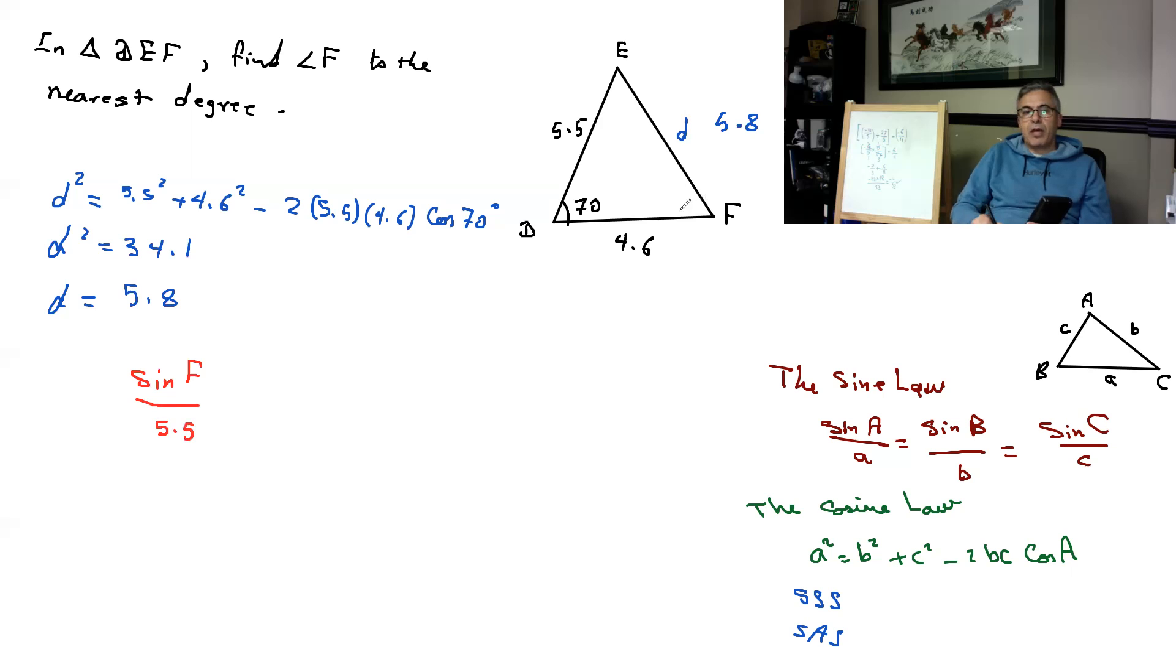over 5.8, the side opposite angle 70. Now just cross multiply the 5.5, so you have sine F equals 5.5 sine 70 over 5.8.